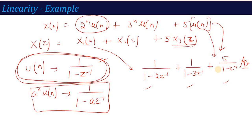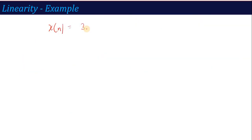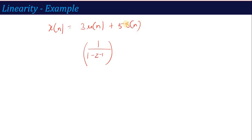Let us take another example. Suppose x(n) = 3*u(n) + 5*del(n). This again falls under the category of linearity property. There is no fixed indication saying 'apply linearity here' — if this question comes to you and you want to calculate the Z-transform, we know u(n)'s Z-transform is 1/(1 - z^(-1)), and del(n)'s Z-transform we learned separately — these are basics that should be memorized by heart.